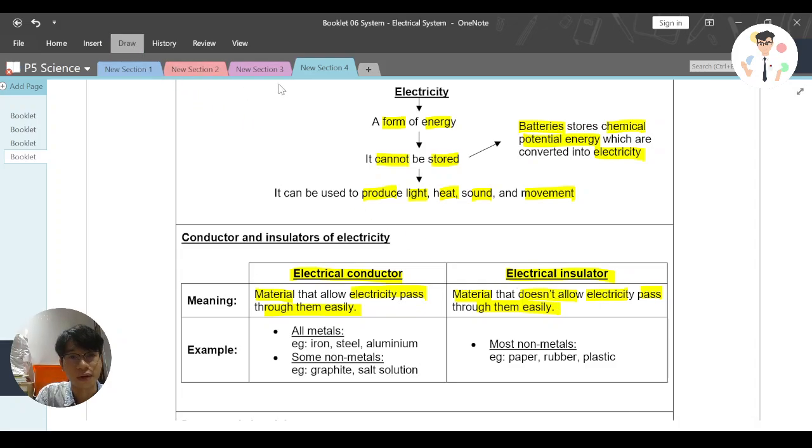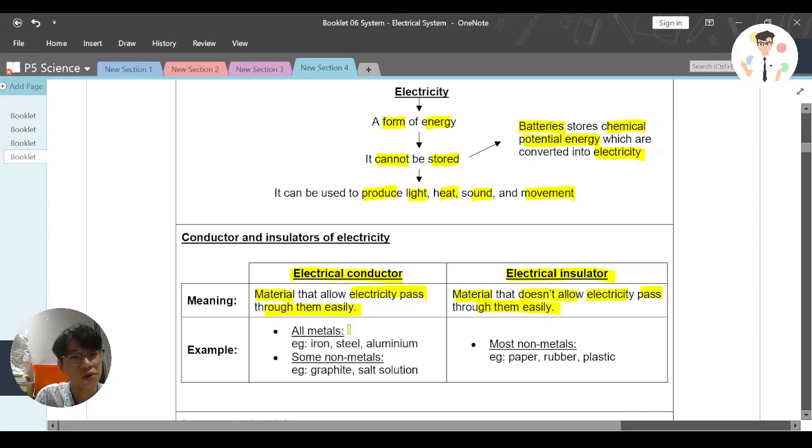So some examples here we have like all metals, basically all metals are electrical conductor such as iron, steel, aluminum. But there are also some non-metals that are actually allowing electricity to pass through them such as graphite, salt solution. On the other hand, insulator, I would say that most non-metals are actually insulator such as paper, rubber or plastic.